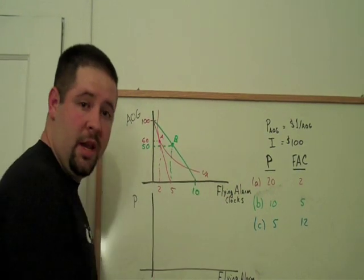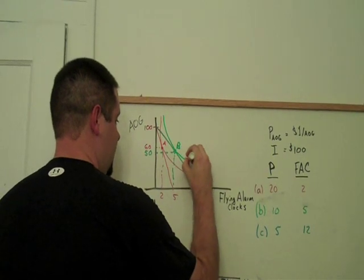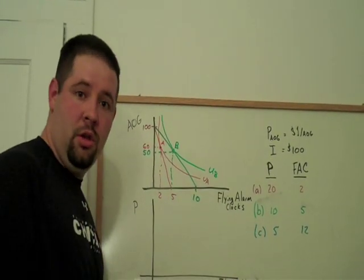And as with point A, as with all optimal bundles, we illustrate this with a tangent indifference curve, which I'll label UB for a utility level of B.